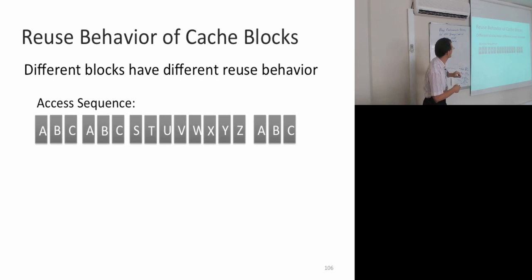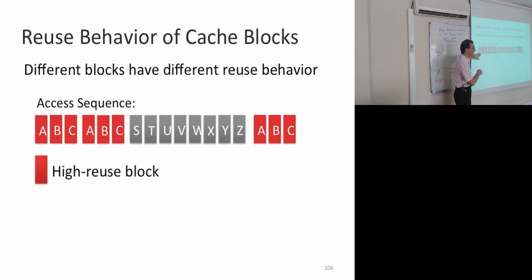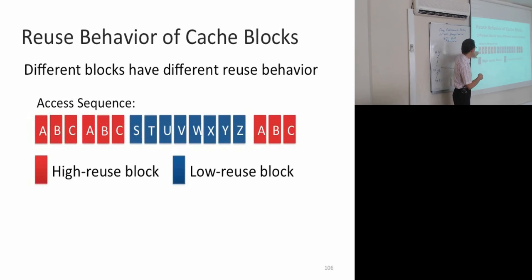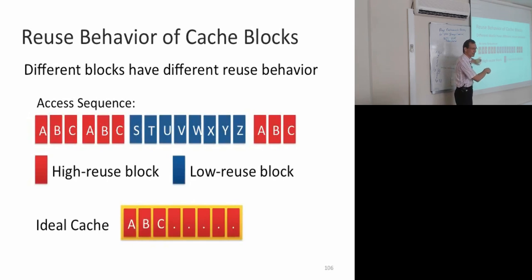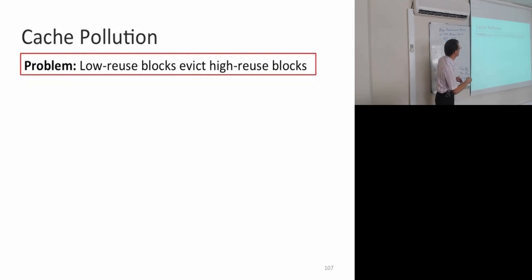Let me give an example of how these blocks behave. Assume an access sequence like this. Some blocks, which are in red, have actually high reuse because they're being reused a lot. Other blocks are low reuse — those are blue. For the rest of the presentation, the high-reuse blocks are red and the low-reuse blocks are blue. Ideally, you would like to keep the red blocks in the cache, because the blue blocks are not going to be reused according to this access sequence.